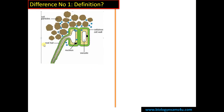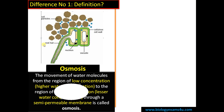Let's start with the definition. Osmosis can be defined as a movement of water molecules from the region of low concentration to the region of high concentration through a semipermeable membrane.